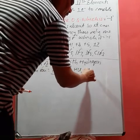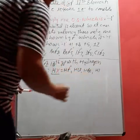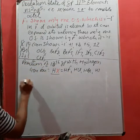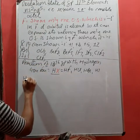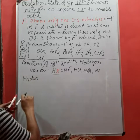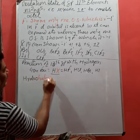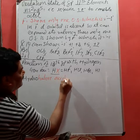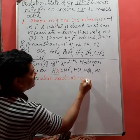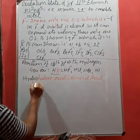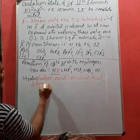All these are called hydrohaloic acids. These are called mineral acids, which are very strong acids.